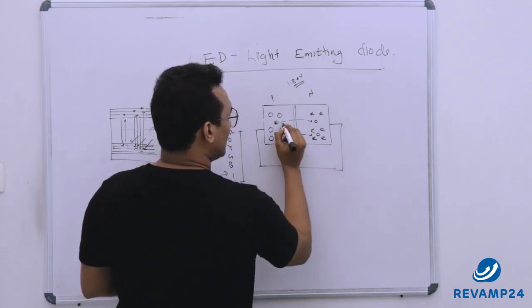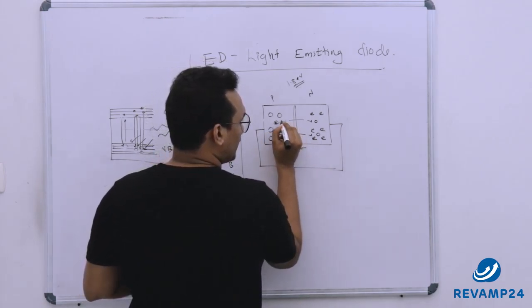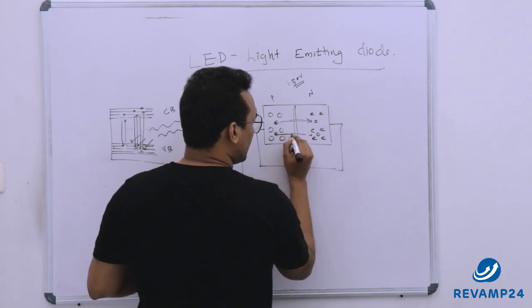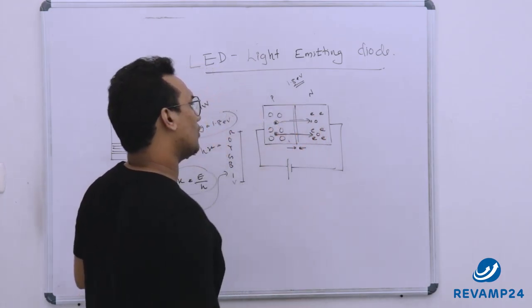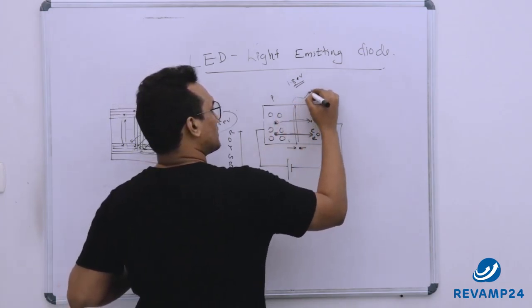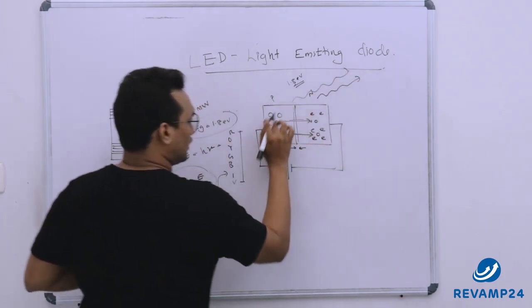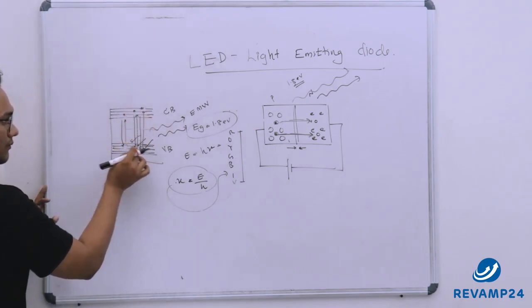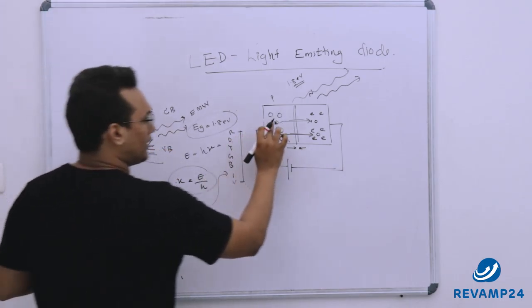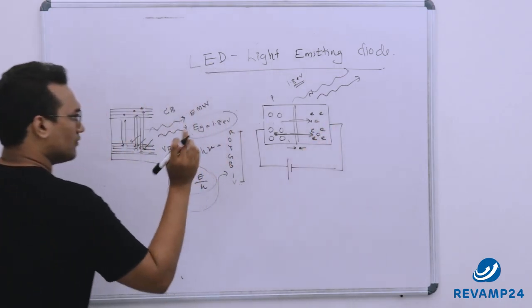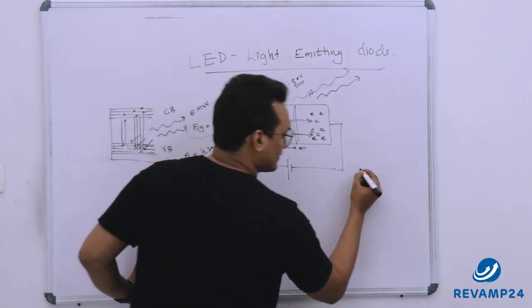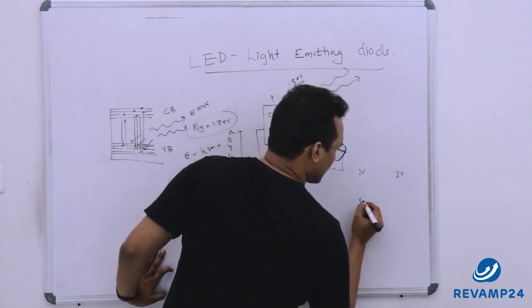Now what will happen, this electron can, electron from here can easily jump across or move across the depletion region and they can recombine with the holes and on recombination that will emit energy. Now recombining means that is coming back to valence band. On recombination this electron when they occupy the position of hole which means now the holes are here silicon silicon silicon silicon.